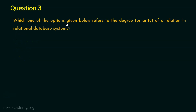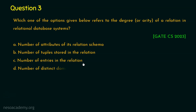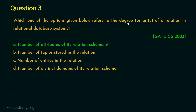Question number three: which one of the options refers to the degree or arity of a relation in relational database systems? This question was asked in GATE computer science in 2023. Options: A) number of attributes of its relation schema, B) number of tuples stored in the relation, C) number of entries in the relation, D) number of distinct domains of its relation schema. The right answer is option A — the number of attributes or columns is referred to as the degree or arity. For example, an employee relation with employee number, name, and city has an arity of three.